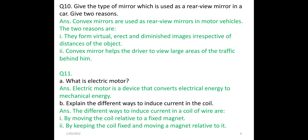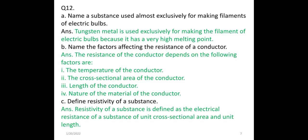Question 11: What is an electric motor? An electric motor is a device that converts electrical energy to mechanical energy. Explain the different ways to induce current in a coil. The different ways to induce current in a coil of wire are: by moving the coil relative to a fixed magnet, and by keeping the coil fixed and moving a magnet relative to it.